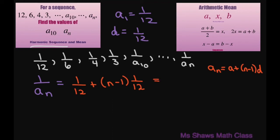Alright, so this is going to end up being n divided by 12. Okay, so now we have, if this is 1 divided by a sub n, that means a sub n is going to be 12 divided by n.